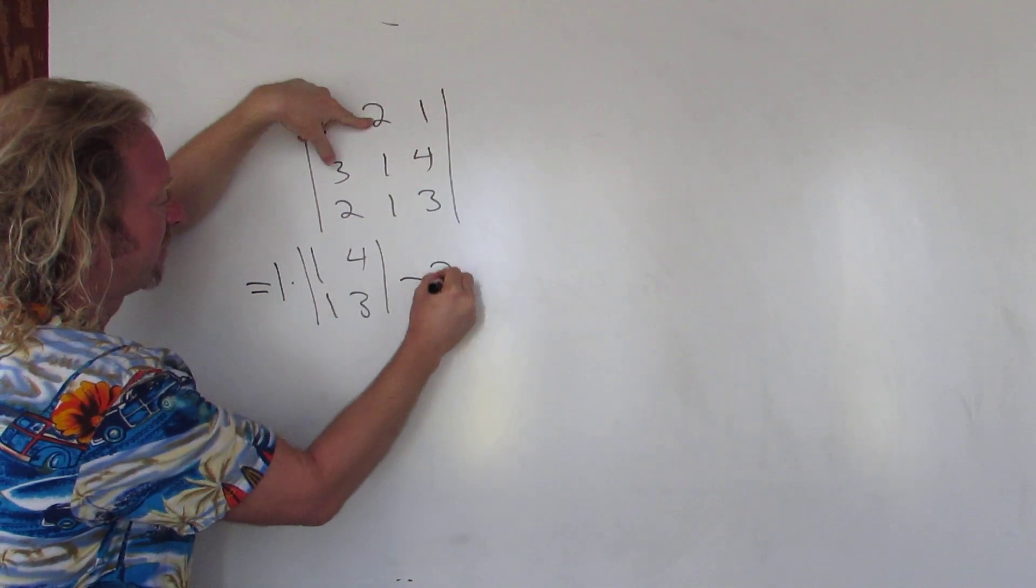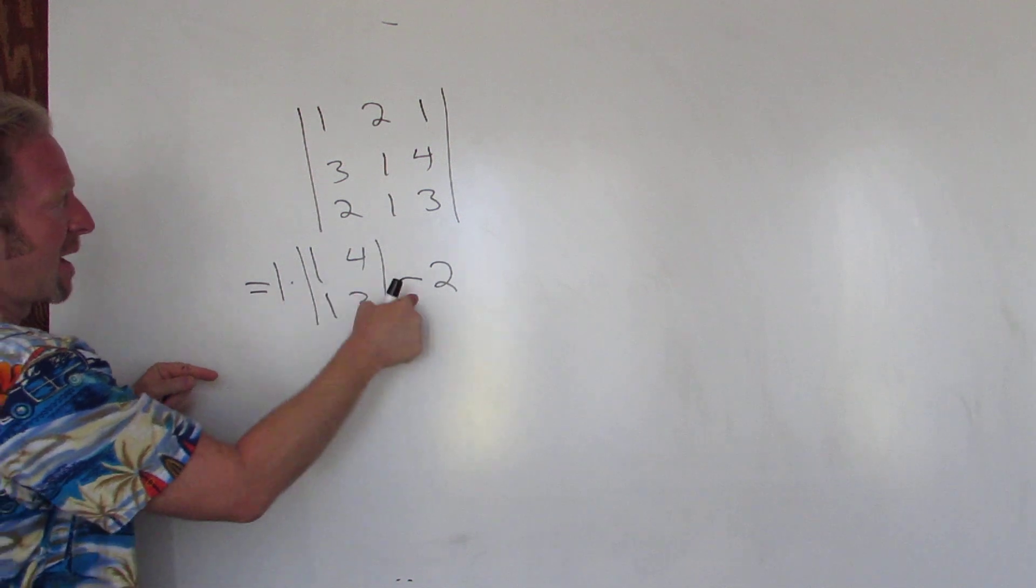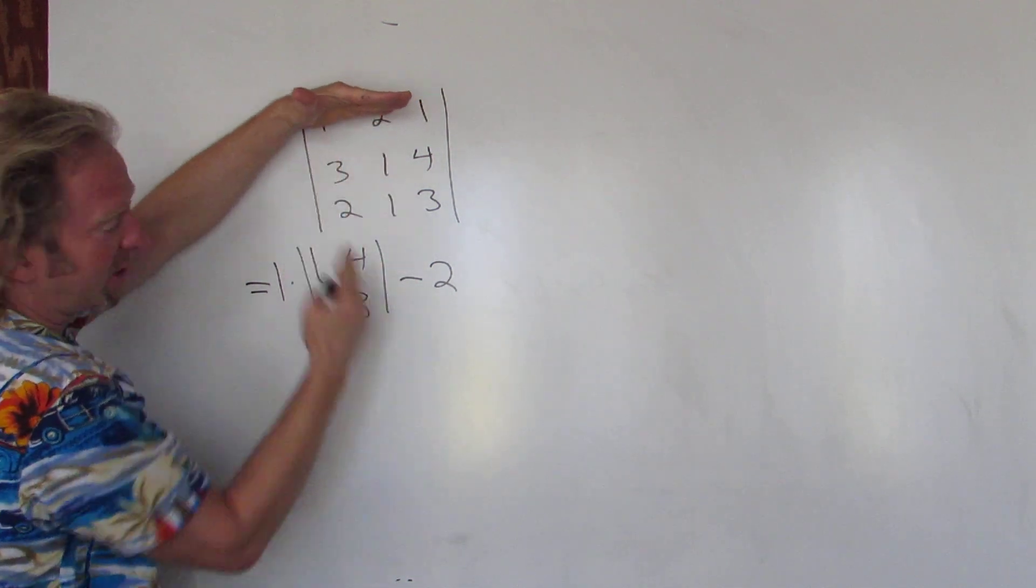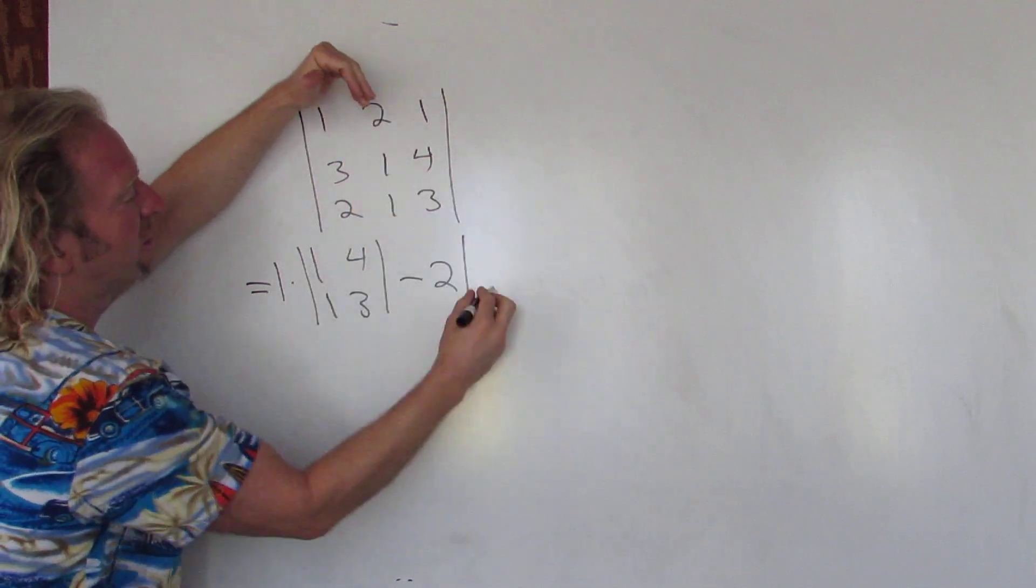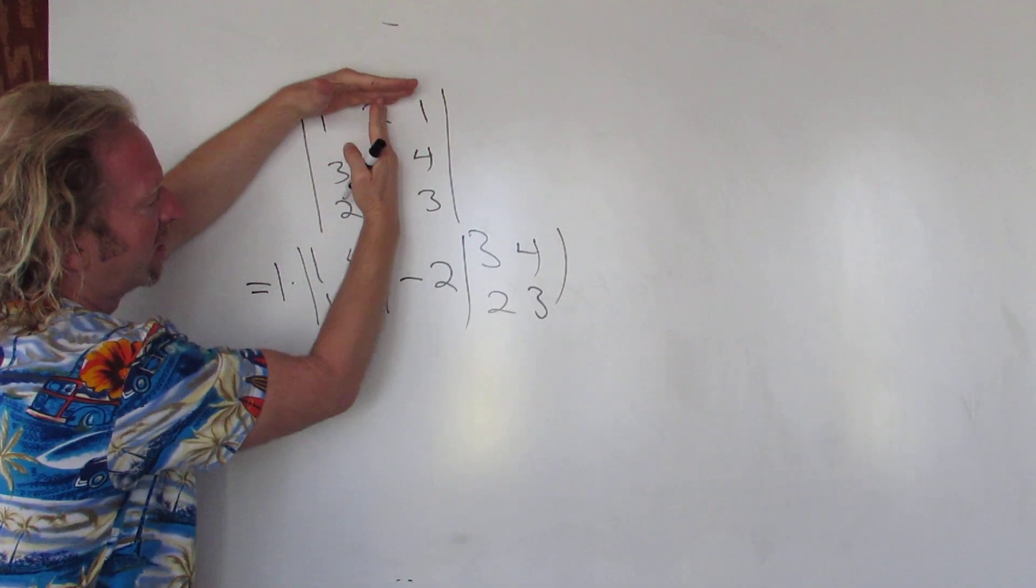Then it's always minus, and then this number here. So it's plus and then this number, then minus and this number. Cross it out: 1, 4, 1, 3. Now cross this one out. Check it out: 3, 4, 2, 3, 3, 4, 2, 3, 3, 4, 2, 3. Just cross it out, all day long.